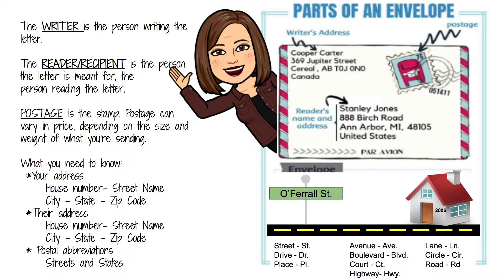Another abbreviation you need to know — just to keep your addresses from being so long — is writing the abbreviation for the street type. Because sometimes you can live on a street, but "street" is kind of a generic term for that pavement in front of your house. It doesn't always have to be a street; it could be an avenue, a lane, a drive, a circle, or a road.